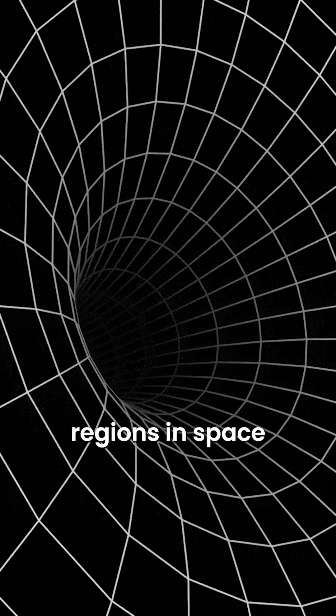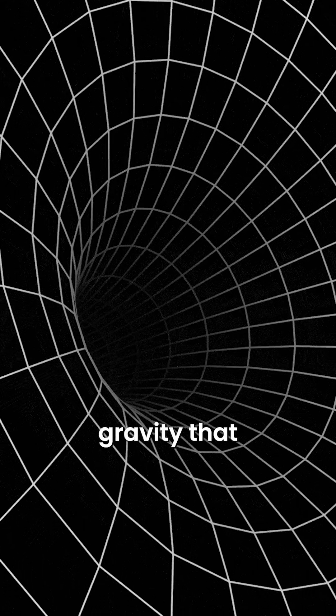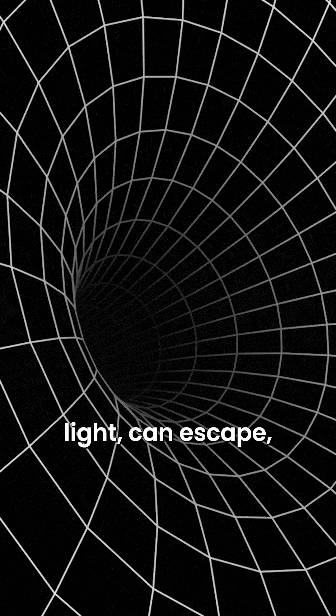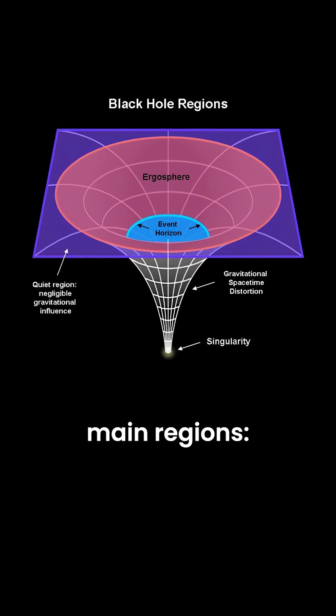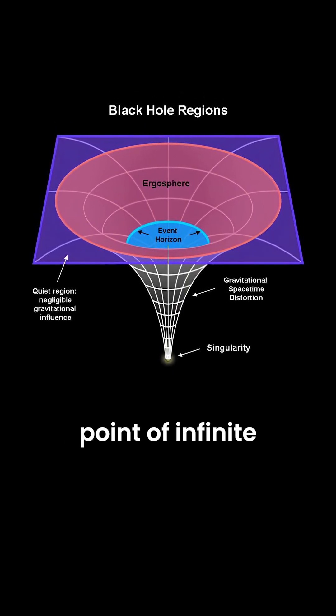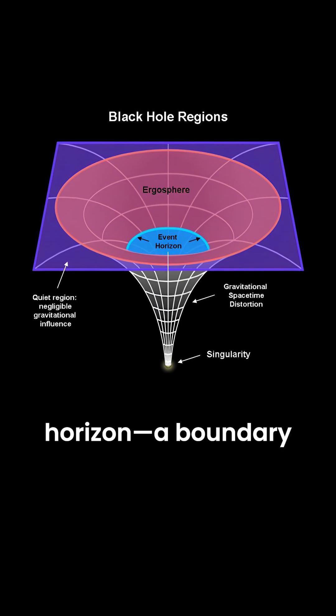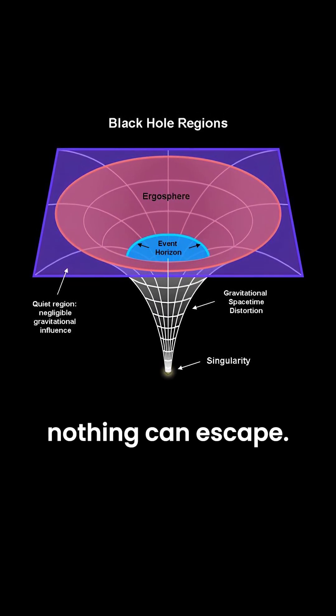Black holes are regions in space with such strong gravity that nothing, not even light, can escape. They feature two main regions: the singularity, a point of infinite density at the center, and the event horizon, a boundary beyond which nothing can escape.